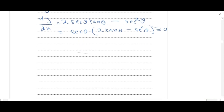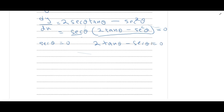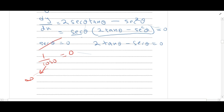So either secθ equals 0 or (2 tanθ minus secθ) equals 0. Since secθ can never be equal to 0, because 1/cosθ cannot be 0 — it approaches infinity — this case is neglected.